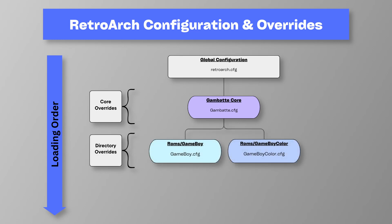Next up is the directory overrides, or content directory overrides. Just like the core overrides, they inherit all the settings from the global settings, but also any of the core override settings if the game is using that core. Changes made and saved to a directory override apply to any game that is located in a specific folder or directory. In this example, I have Game Boy and Game Boy Color games in different folders in my ROMs folder. If we wanted to make a change just to Game Boy games — because Gambatte is a core that runs both Game Boy and Game Boy Color, any changes there affect both systems — we would use the directory overrides instead of the core override.